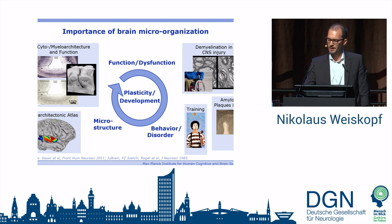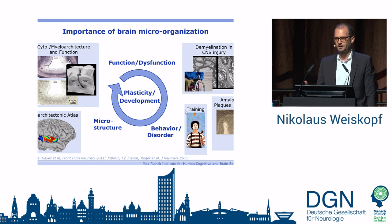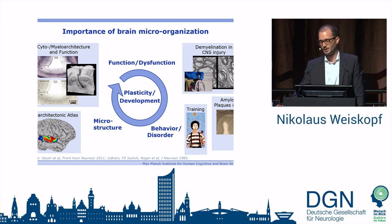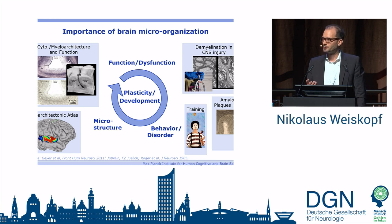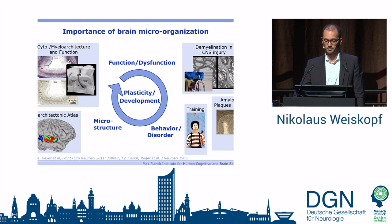Function itself — for example, if we train subjects or if there's a pathology — can actually affect the microstructure. Even subtle changes in microstructure can lead to debilitating diseases. So, to really understand the circle between structure and function at the microstructure and mesoscopic level, what we need is a tool we can apply non-invasively in humans. That's exactly the motivation driving our long-term research program.